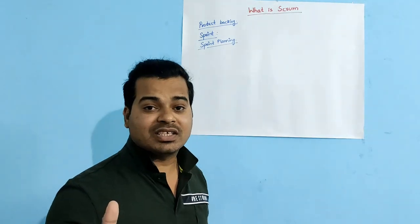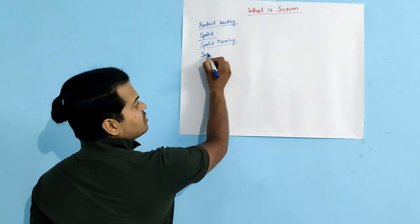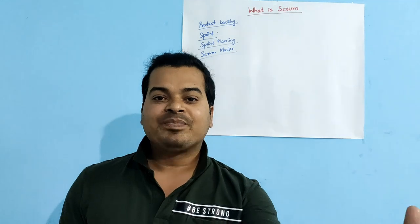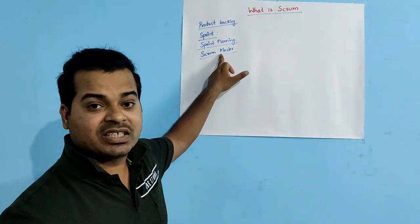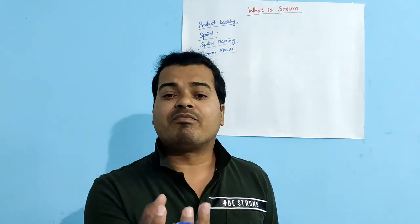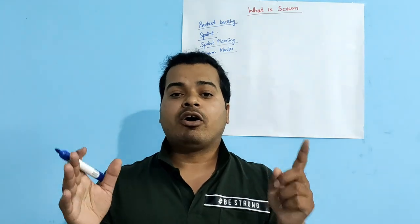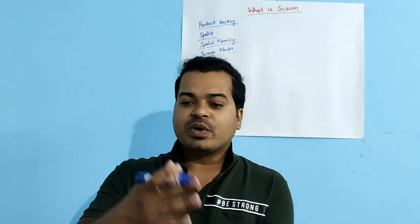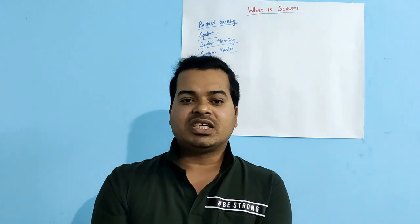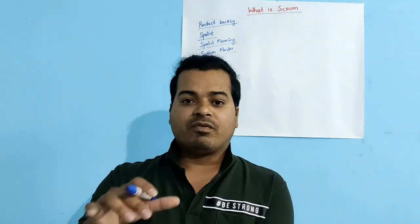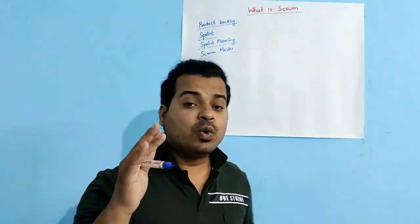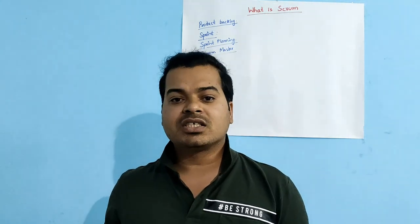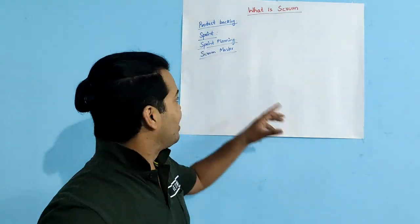The next concept is the Scrum Master. The Scrum Master is the person responsible for the delivery of software to the customer within a planned period of time. They work with project management tools like Jira, creating stories and tasks, assigning them to developers and test engineers, and tracking the work of all technical team members. Senior developers, senior test engineers, product managers, or business analysts can all become a Scrum Master.